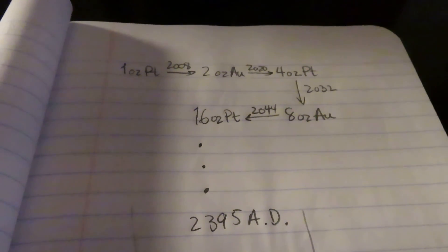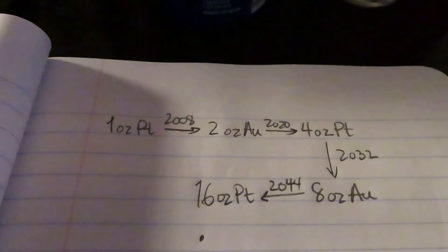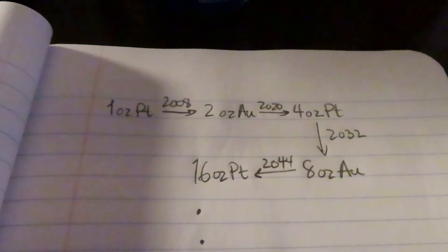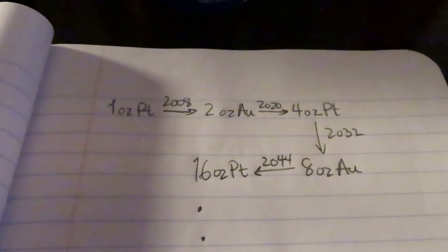Back in 2008, if you had an ounce of platinum, you could have traded it for 2 ounces of gold. And then in 2020, you could have traded it for 4 ounces of platinum.